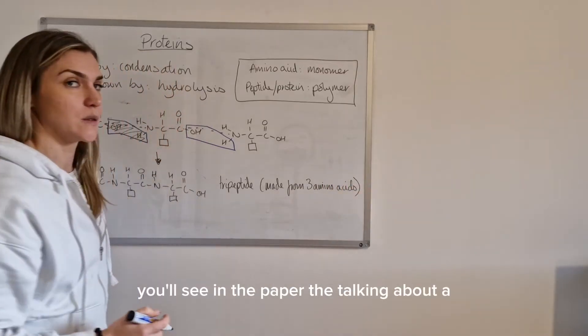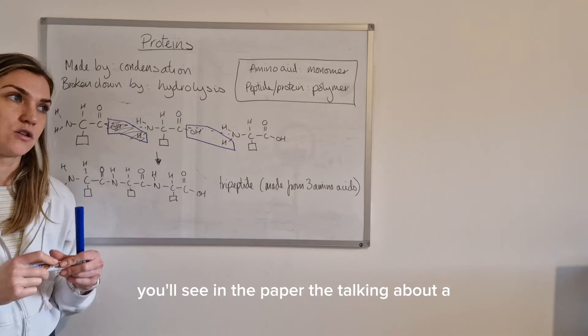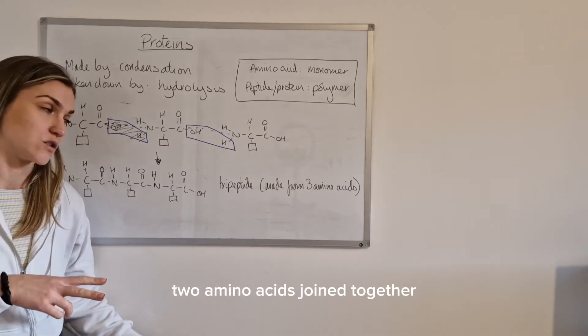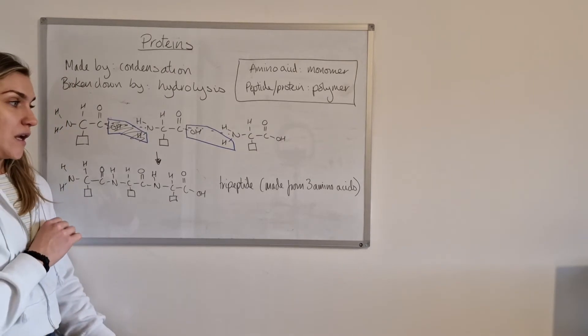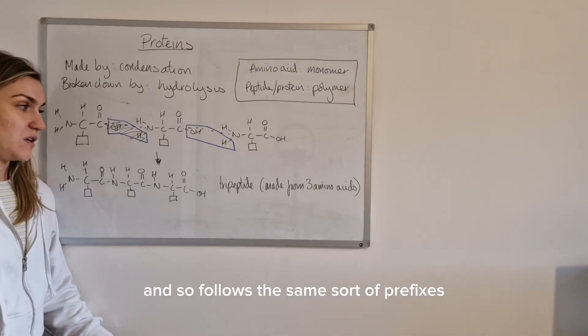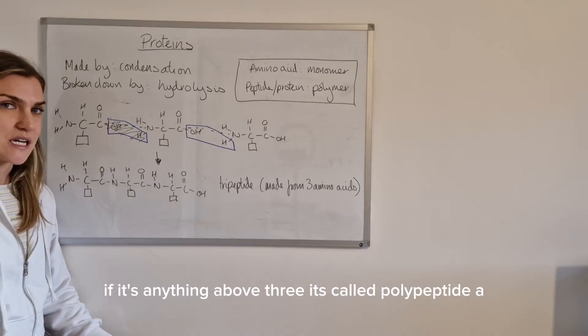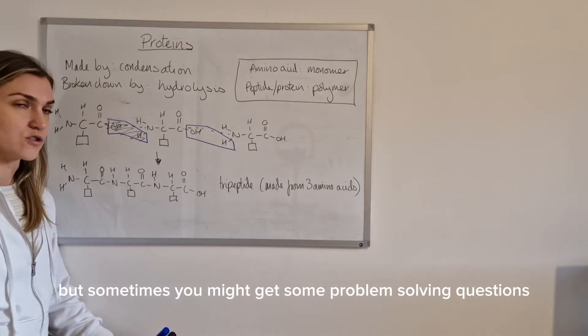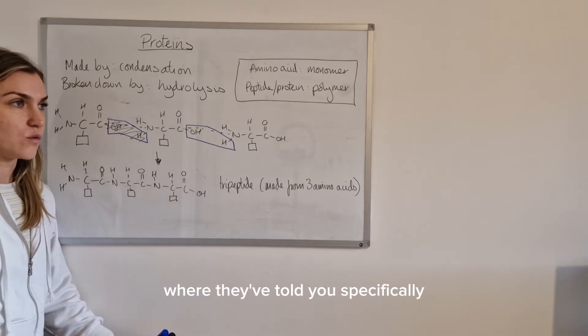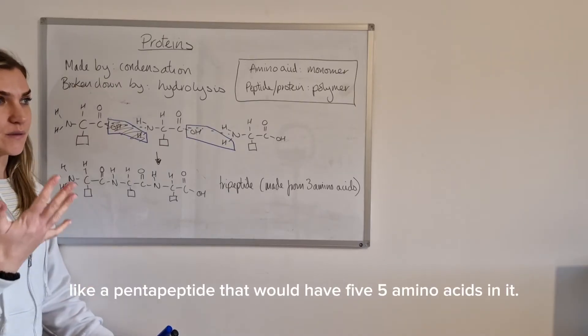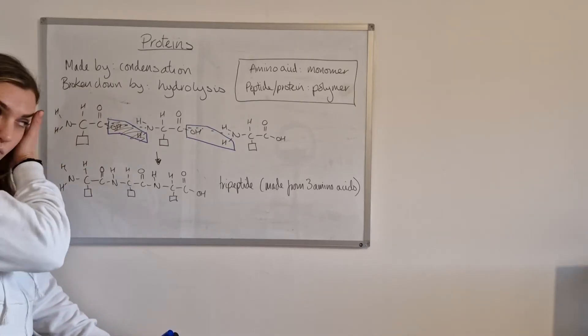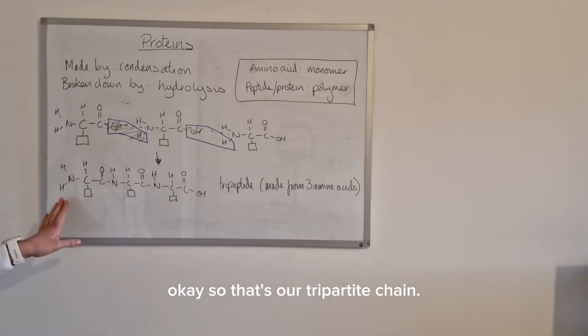Quite often you'll see in the paper them talking about a dipeptide, that's just where you've got two amino acids joined together. So it follows the same sort of prefixes. If it's anything above three tends to be called a polypeptide but sometimes you might get some problem solving questions where they've told you specifically what type of peptide it is like a pentapeptide, that would have five amino acids in it. Okay so that's our tripeptide chain.